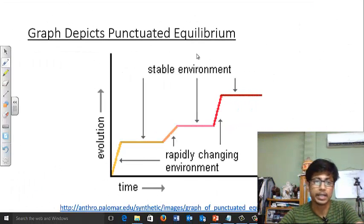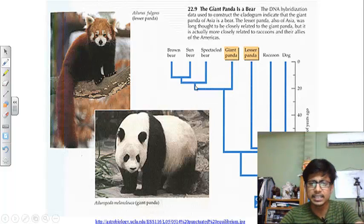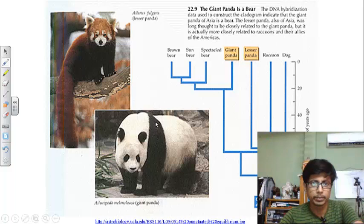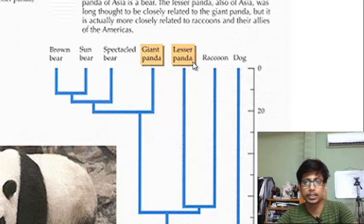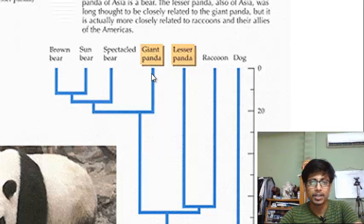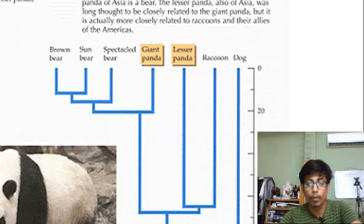You see here the panda, two different examples of panda are given and they originated from - see the common ancestor here - and this is a cladogram. You can see the origin. This is the common ancestor, from this ancestor two branches. It remains at equilibrium for some time. Then rapid change, two branches, again more branches and this way it produces different types of offspring, different types of species from one common ancestor and that's how things work.